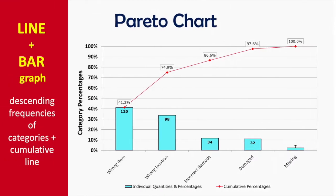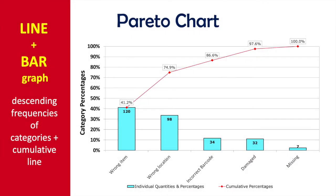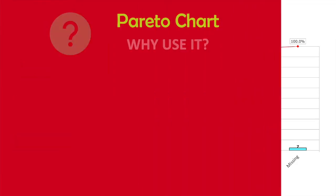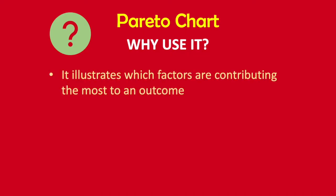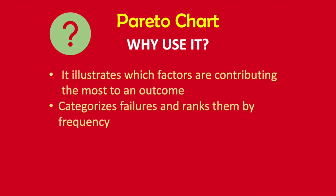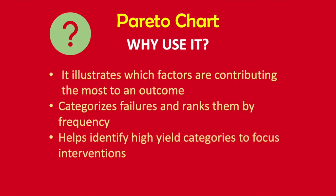What is a Pareto chart? A Pareto chart consists of a bar chart plus line chart with descending frequencies of categories and a cumulative line. The Pareto chart is helpful in illustrating which factors are contributing the most to a particular outcome. It categorizes failures and ranks them by frequency, and helps identify high-yield categories to prioritize the focus of interventions.